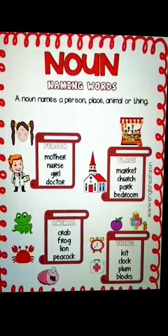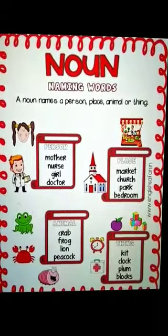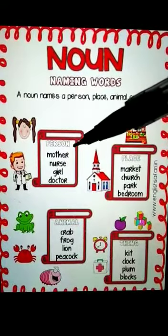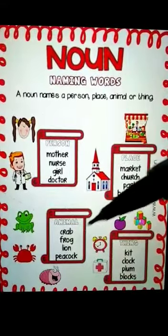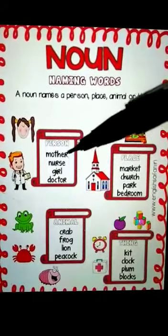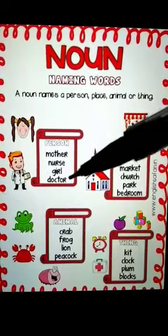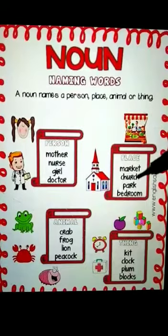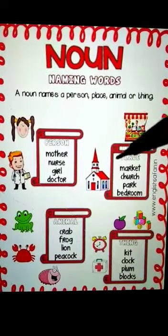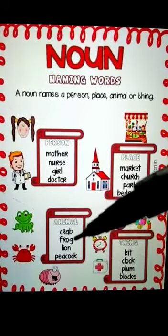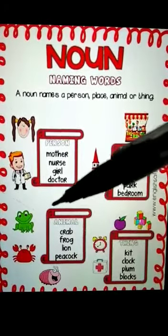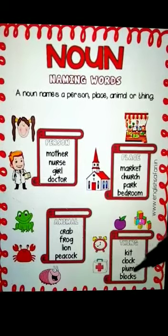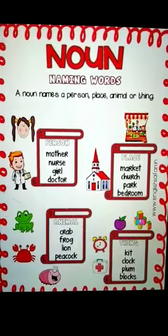A name of a person, place, animal or a thing are called naming words. Here are some examples of persons, places, animals and things. Let's read this. Person: mother, nurse, girl, doctor — these all are persons. Places: market, church, park, bedroom — these all are places. Animals: crab, frog, lion, peacock — these are the names of some animals. Things: kit, clock, plum, blocks — these are the names of some things.